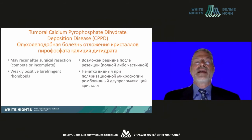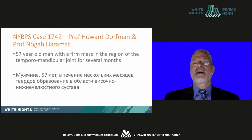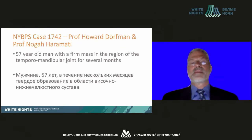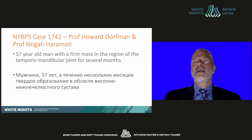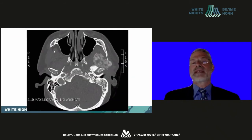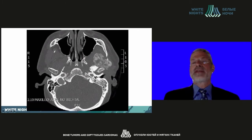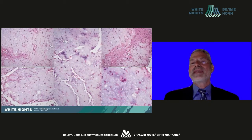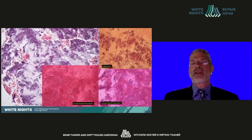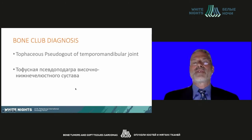We find weakly positively birefringent rhomboids on polarizing light microscopy. The patient is a 57-year-old male with a firm mass in the region of the temporomandibular joint for several months. This is the classic CT of tofaceous pseudogout: cloud-like calcification at the left in the region of the temporomandibular joint. On pathology, we see what looks like cartilage but without the classic nests of chondrocytes seen in synovial chondromatosis. On polarizing light microscopy, we see areas of both blue and gold due to compensating polarization of the weakly positively birefringent rhomboids.